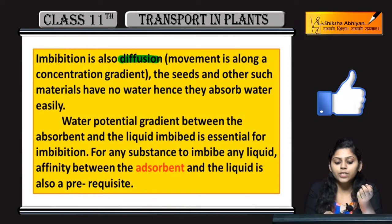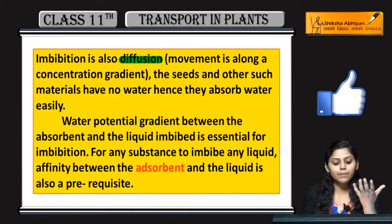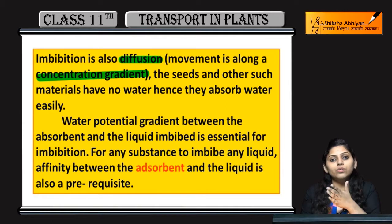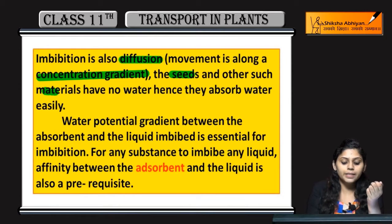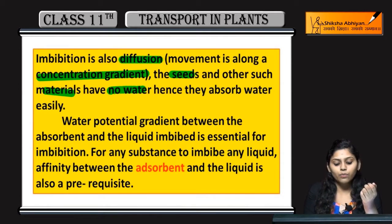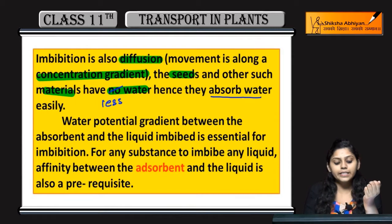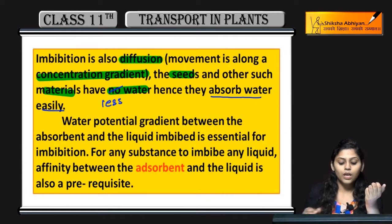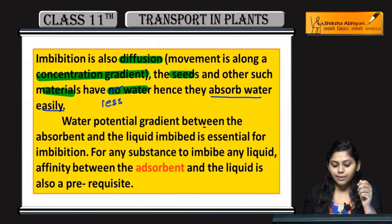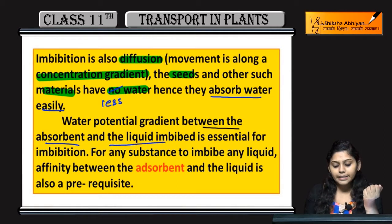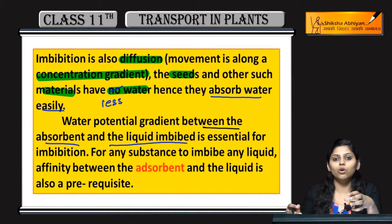Imbibation ye bhi ek diffusion hai kyun? Because ismein bhi movement depend karti hai concentration gradient pe — along the concentration gradient movement hoti hai. Seeds aur kuch other materials mein water nahi hota, ya you may say less water hota hai, isi liye ye easily absorb karti hai water ko.